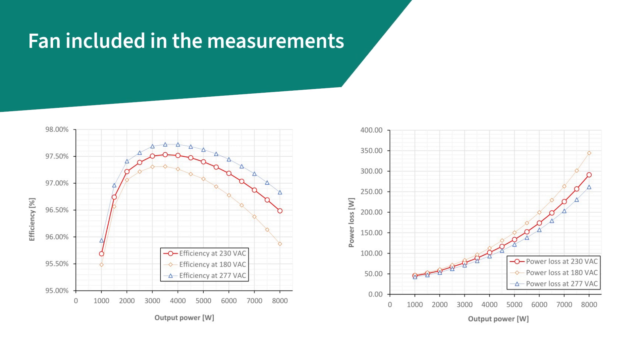For 230 volts AC, the efficiency is peaking to 97.5% at around 50% of the rated load and is 96.5% at full load. Losses are also reported in all three cases.